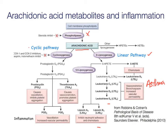The cyclic pathway involves the cyclooxygenase enzymes, producing prostaglandins including prostacyclin and prostaglandin E2, as well as the thromboxanes. Thromboxane A2 is involved in platelet aggregation. The prostaglandins are primarily thought of as the eicosanoids responsible for inflammation.